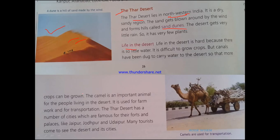The camel is an important animal for the people living in the desert. Camels are used to move from one place to another and in farm work — just as cows are used in the plains and horses in the mountains, camels serve that role in the desert. There are also famous cities in this region with beautiful forts — big palaces where kings once lived. The famous cities are Jaipur, Jodhpur, and Udaipur, which are famous tourist attraction spots.